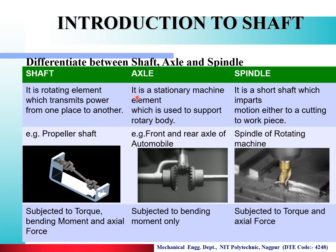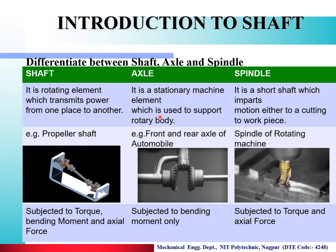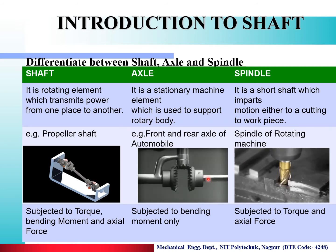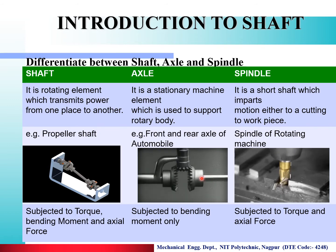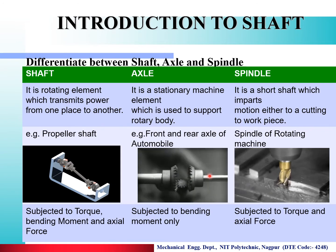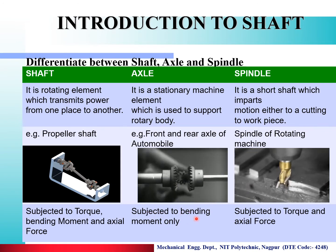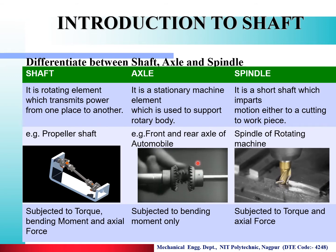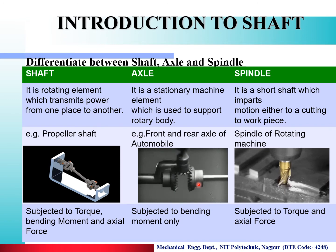The axle is a stationary machine element which is used to support a rotating body. Here you can see the front and rear axle of an automobile, which supports the differential and the rear wheel. The axle is subjected to bending moment only, because the load acts on the axle, and that is why the bending moment is created.